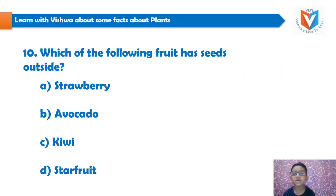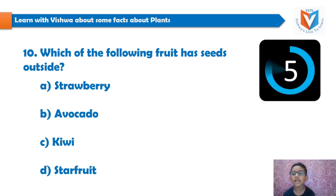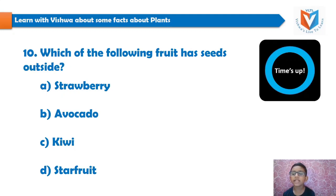And the last question is: which of the following foods has seeds outside? Strawberry, avocado, kiwi, starfruit. Your 5 seconds time starts now... time's up. No, I am not going to tell the answer in this video. I will tell the answer in the next video. If you know the answer, please put the answer in the comment section.